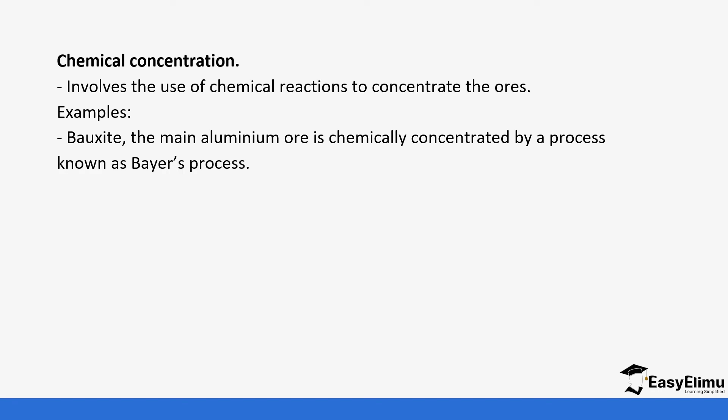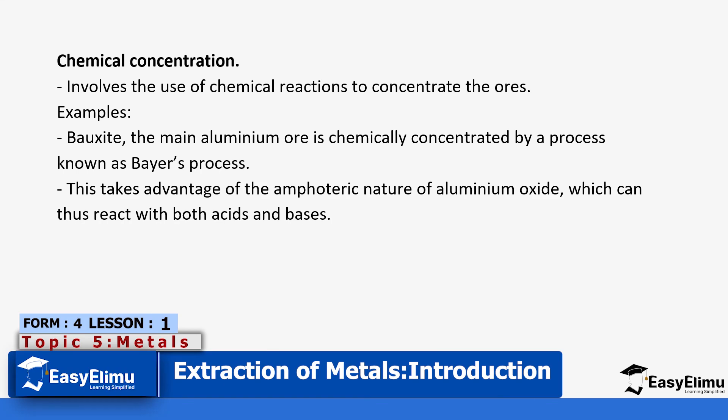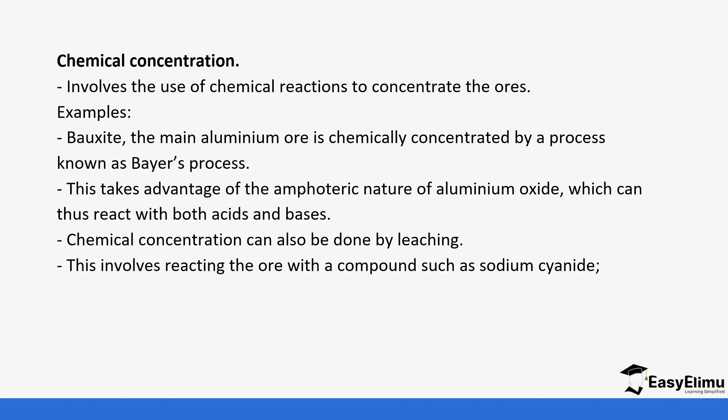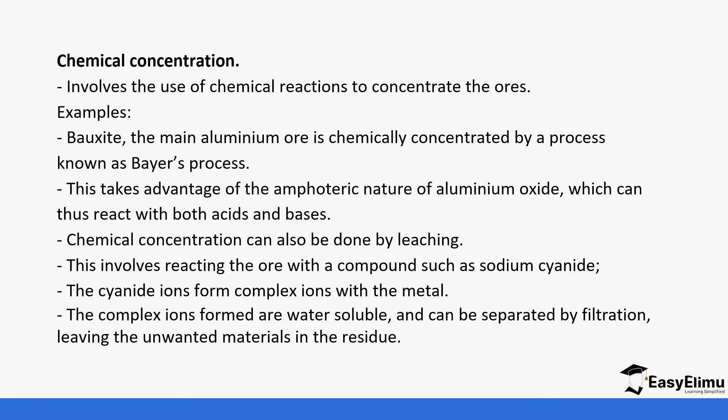Finally, we have chemical concentration. Chemical concentration involves the use of chemical reactions to concentrate the ore. For example, bauxite, the main aluminum ore, is chemically concentrated by a process known as Bayer's process. This takes advantage of the amphoteric nature of aluminum oxide, which can react with both acids and bases. Chemical concentration can be done by leaching, which involves treating the ore with a compound such as sodium cyanide. The cyanide ions form complex ions with the metal. The complex ions formed are water-soluble and can be separated by filtration, leaving the unwanted materials in the residue.